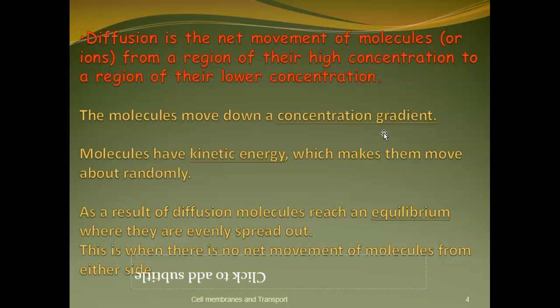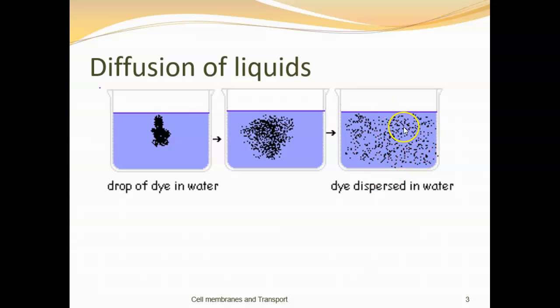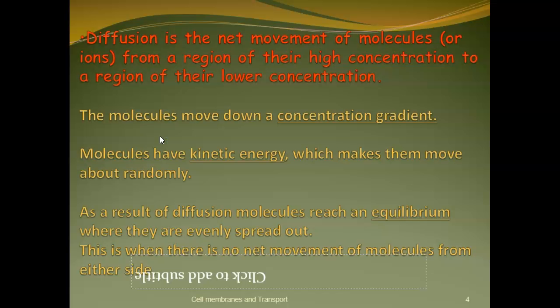It's the net movement because these molecules are constantly moving. Theoretically, if you waited long enough, they could go back to that ordered state - it might take a few billion years. The molecules have this energy that makes them move in all kinds of crazy directions until they reach equilibrium. At equilibrium, they constantly move but there's no net movement.